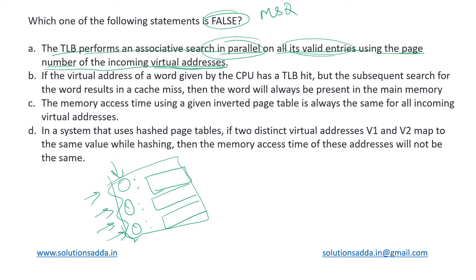The virtual address is the logical address coming from the CPU, with which we determine the page number and the corresponding frame number where the data is actually stored. Using the page number in that virtual address, we can check in the TLB in parallel if it is present in any of its entries. So this statement is true, and since we need to find false statements, we will not include this option.